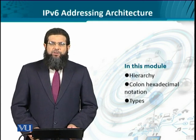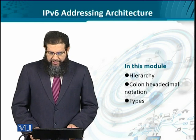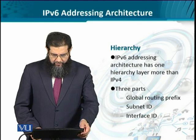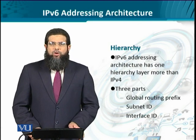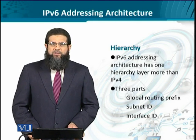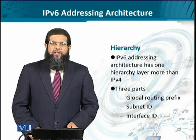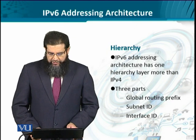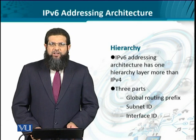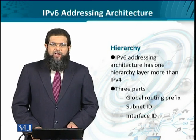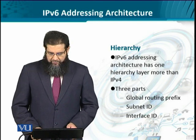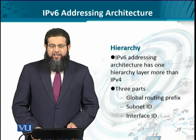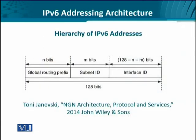We will look at the specific representation format called colon hexadecimal notation and then the address types. IPv6 uses a three-level hierarchy instead of IPv4's two-level hierarchy. In IPv4, we had the network ID and the host ID. Here, we have an additional level to distinguish different kinds of IPv6 addresses. We have a global routing prefix, a subnet ID, and then the interface or host ID. These 128 bits are split into N bits, M bits, and the remainder bits.